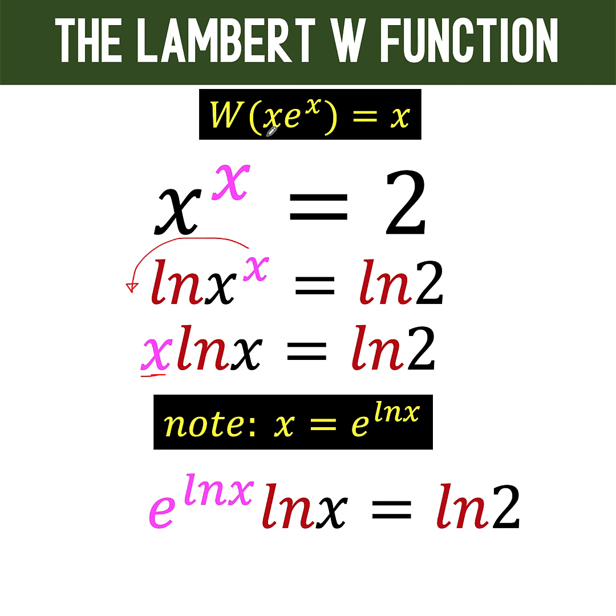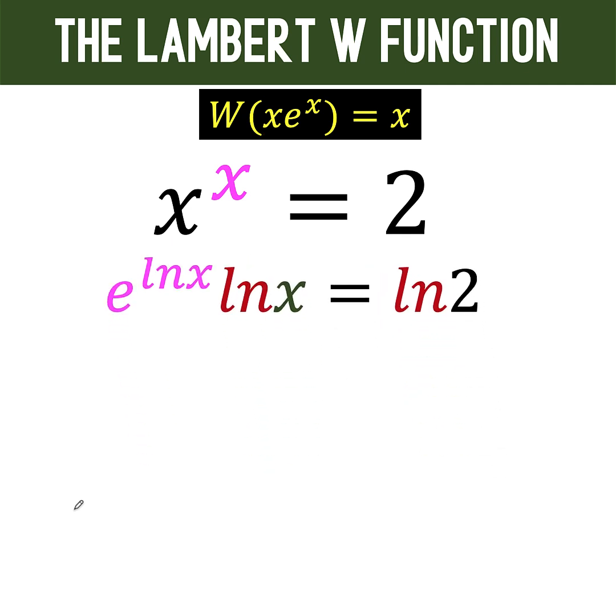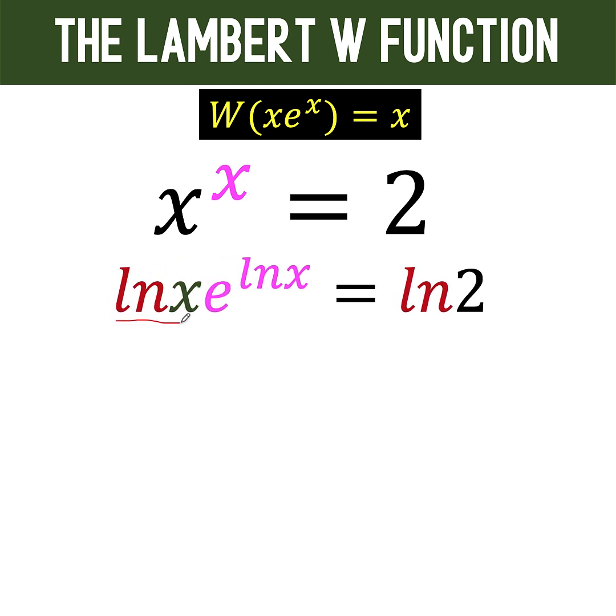Now, since the form we want is certain factor times e raised to another variable, we want this ln x to be written at the front. So let's apply the commutative property of multiplication. That means we can interchange the order of the factors. Now, this ln x and this ln x are the same. So let's use some color code. So this form is exactly the form x times e raised to x.